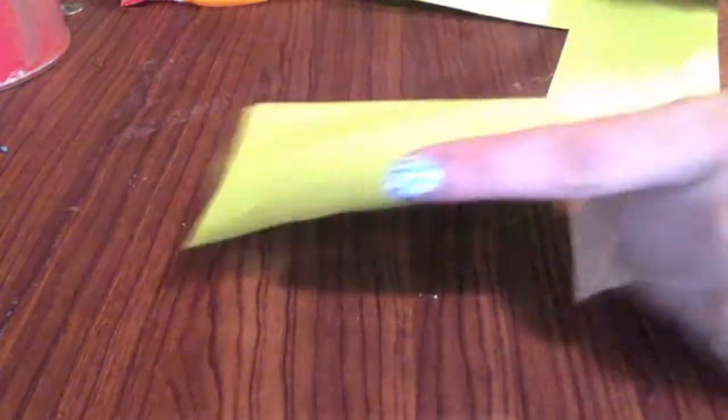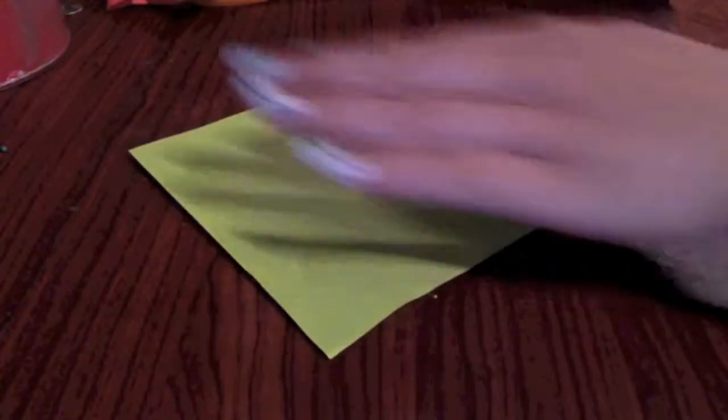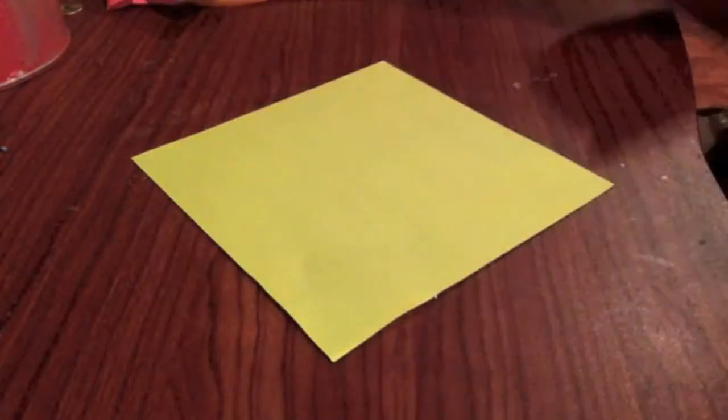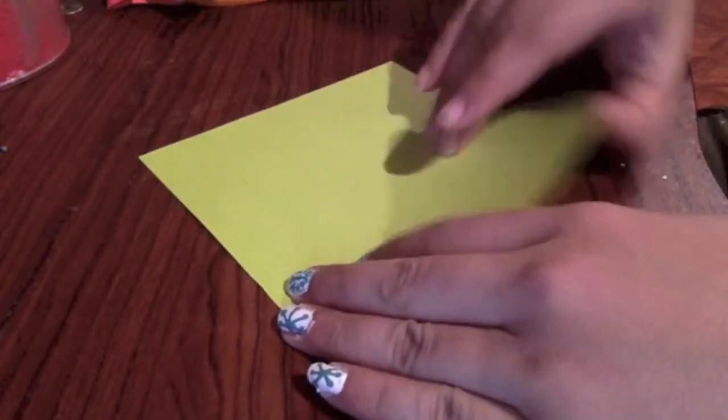First, let's create the envelopes. I am cutting a square that measures 5.5 inches on all sides. Then you're going to cut it, and once you have your square, you will turn it around so it can become a diamond.